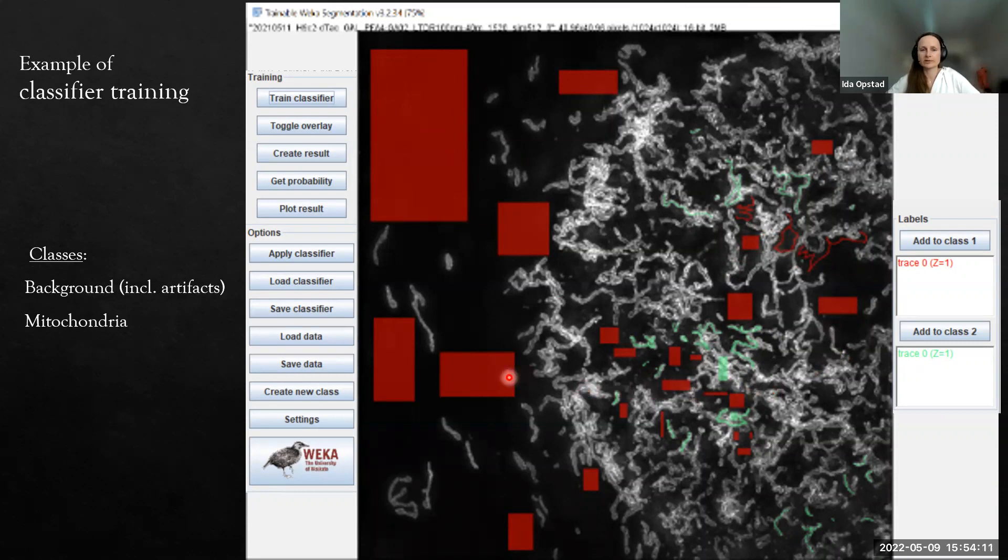I'm not sure how familiar you are with machine learning, but this is our training data then. We have one class of background and mitochondria as the other class, and then we can train the classifier. It instantly shows the results and then we can remark what went wrong and train again. It's quite quick and nice to use.